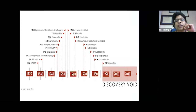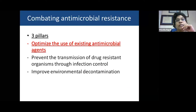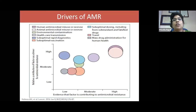Drug companies are hesitant to develop a molecule used for a finite period unlike drugs for cancer, antiretrovirals, diabetes, or hypertension — which patients use for a lifetime. From 2010 onwards, hardly any new drugs have been developed, which is a source of great concern. When combating antimicrobial resistance, three pillars matter: optimizing the use of existing antimicrobial agents, infection control to prevent transmission of drug-resistant organisms, and improving environmental hygiene and decontamination.